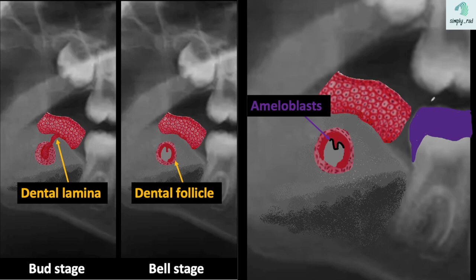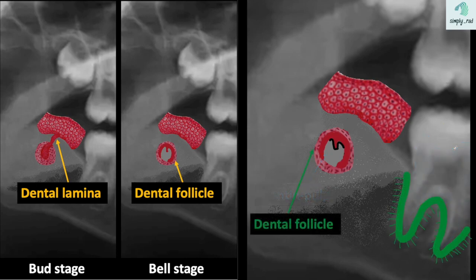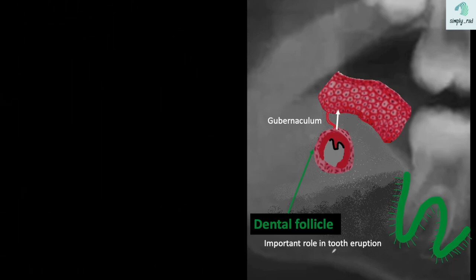Ameloblasts come from the enamel organ. Ameloblasts give us enamel, drawn here in the erupted tooth in violet. Cells from the dental papilla give us the dentin and pulp. While cells from the dental follicle give us the periodontal ligament, alveolar bone, and cementum.